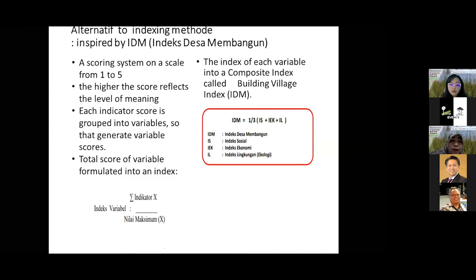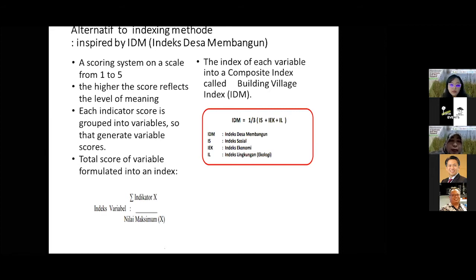We rate each indicator on a scale. For example, when community income around the peatland during restoration is the same as before, the scale may be 3. If it drops 50%, the scale becomes 2; if it drops 100%, it becomes 1. Conversely, if it increases 50%, the scale is 4; if it increases 100%, the scale is 5. All criteria, sub-criteria, and indicators are detailed one by one, given a scale, then combined with other indices — the ecology index, the social index, and so on — to conclude whether the restoration has succeeded, not yet succeeded, or failed.